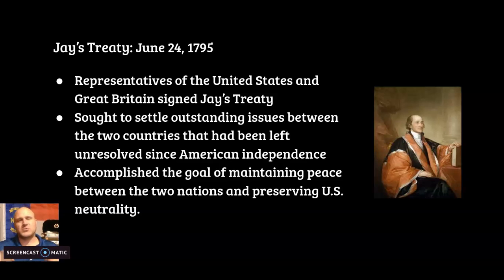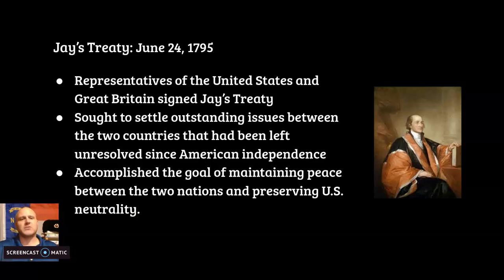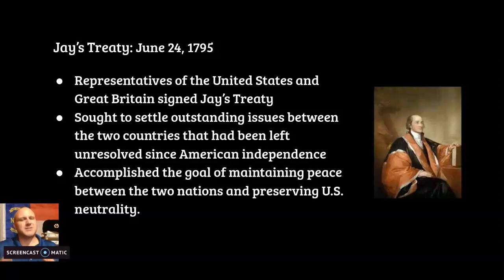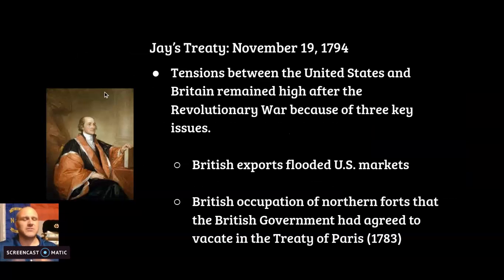The first treaty we're going to dive into is Jay's Treaty. That's John Jay right there on the right-hand side. Jay's Treaty is signed June 24th, 1795, between the United States and Britain — representatives from both countries signed it. It sought to settle disputes that came up between the United States and Britain after the Revolutionary War. It maintains peace and helps the United States preserve their neutrality.